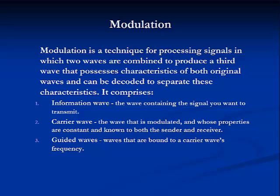Let me define modulation as it relates to telecommunications signals. Basically, modulation is an encoding-decoding processing technique in which two waves are combined to produce a third wave. This third wave possesses the characteristics of both original waves, and then is decoded to separate out the characteristics of the original waves. Modulation consists of three components: the information wave that contains the signal you want to transmit, the carrier wave which is the modulated wave whose properties are constant and known to both the transmitter and receiver, and guided waves which are bound to a carrier wave's frequency.